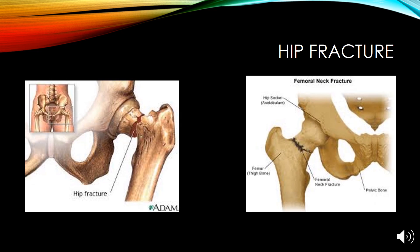The hip is a ball and socket joint which allows for the upper leg to bend and rotate at the pelvis. A break in the upper quarter of the femur is known as a hip fracture. Hip fractures can occur from a fall or a blow to the side of the hip, and people with osteoporosis are more susceptible to breaking their hip when falling.